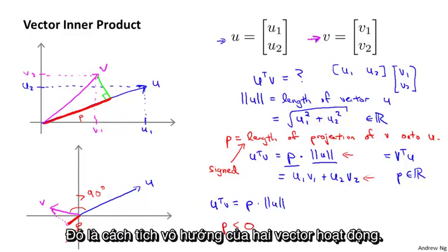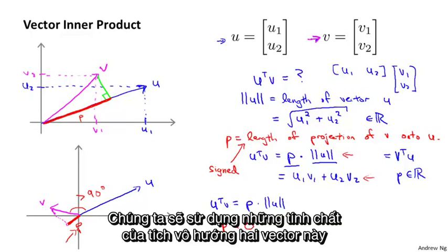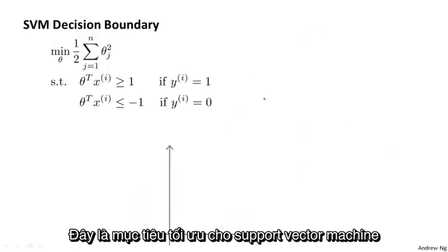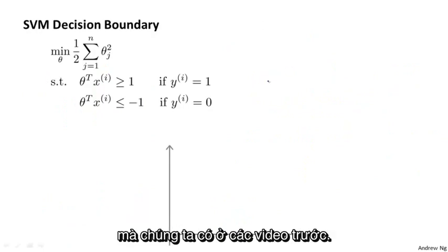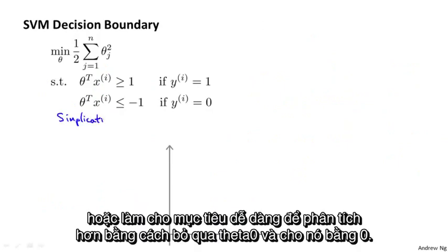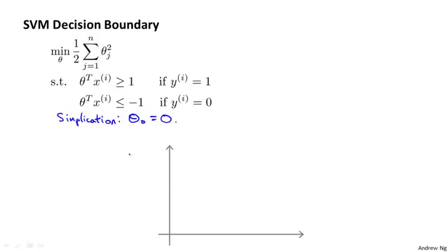So that's how vector inner products work. We're going to use these properties of vector inner products to understand the support vector machine optimization objective a little better. Here's the optimization objective for the SVM that we worked out earlier. For the purpose of this analysis, I'm going to make one simplification to make the objective easier to analyze: I'm going to ignore the intercept term and set theta zero equal to zero.